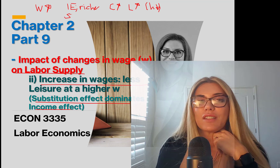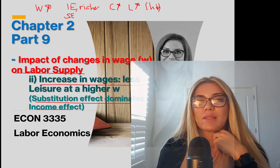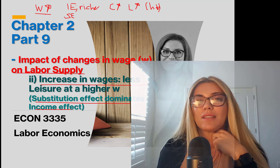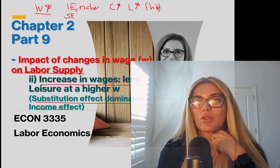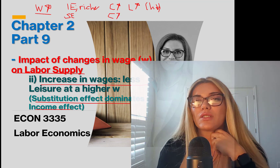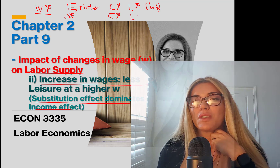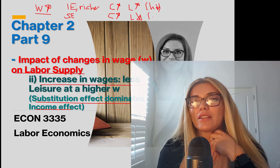The substitution effect says to run away from the thing that is relatively more expensive. The wage rate goes up, so leisure is relatively more expensive and consumption is cheaper. So you're going to increase your consumption and run away from leisure. Therefore, hours are going up.